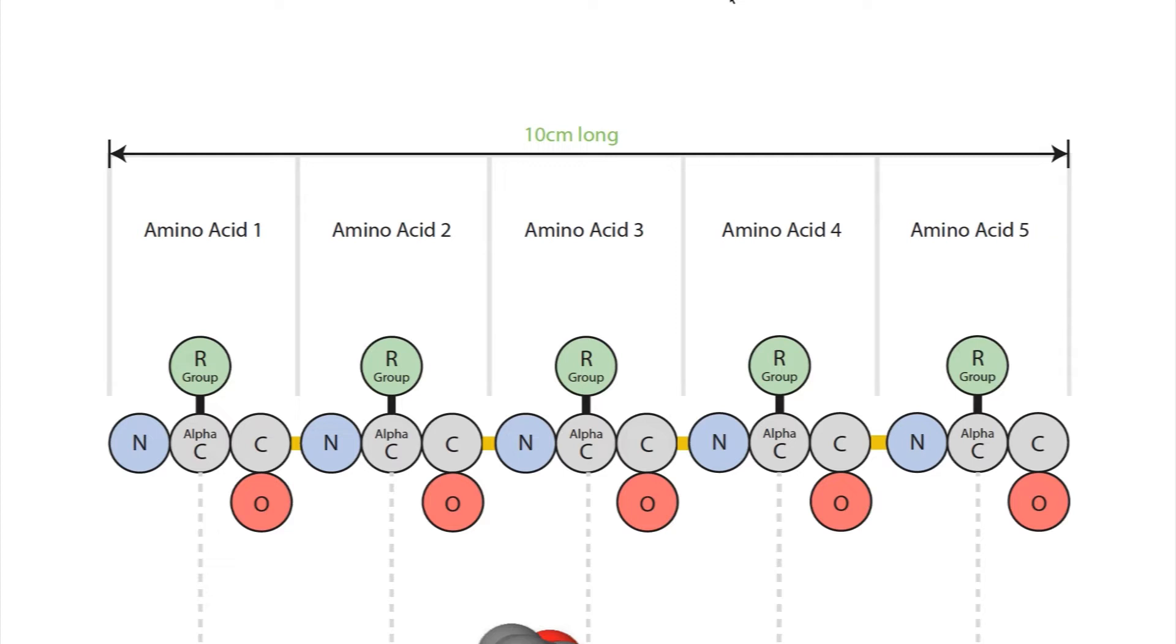It does have a very logical answer, and I'm going to walk through that, hopefully using some of these graphics to help out. To simplify it, rather than using an 85 amino acid long section, I'm just going to use a 5 amino acid long section. It's shown on screen right here.